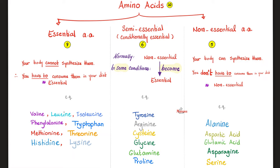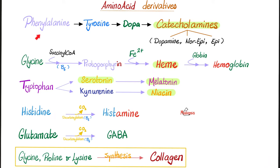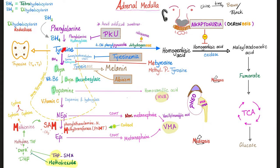But in the last video, we talked about phenylketonuria. These patients cannot convert phenylalanine into tyrosine because they are missing the key enzyme, phenylalanine hydroxylase. Which means in PKU, tyrosine becomes an essential amino acid that you have to eat in the diet. Phenylalanine will give us tyrosine by phenylalanine hydroxylase.